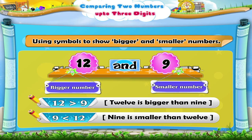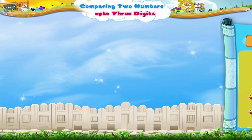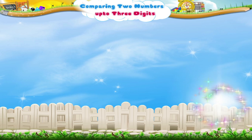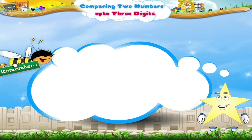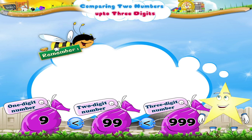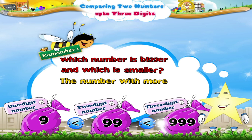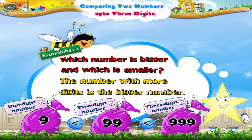Now let us compare some more numbers. Just remember: when we have to decide which number is bigger and which is smaller, the number with more digits is the bigger number.